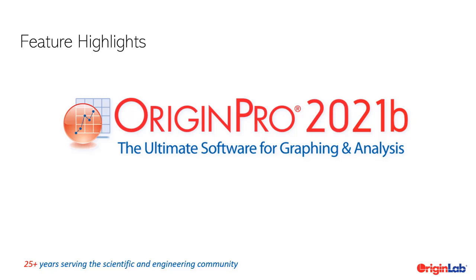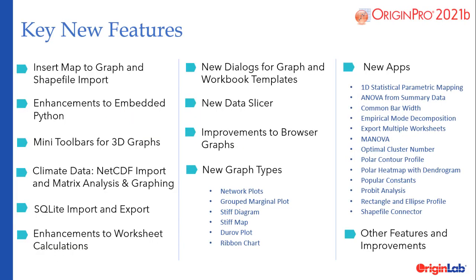Origin Lab is proud to announce the release of Origin and Origin Pro 2021b, end of April 2021. Key new features in this version include quick insert of maps to graph and shapefile import, enhancements to embedded Python, mini toolbars for 3D graphs, significant NetCDF improvements for working with climate data, SQLite import and export, enhancements to worksheet calculations, new dialogs for graph and workbook templates, a new data slicer for filtering data on graphs, improvements to browser graphs, several new apps and new graph types, and many other features and improvements.